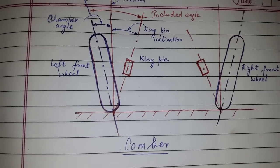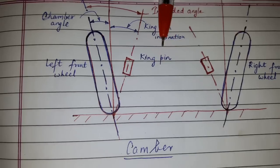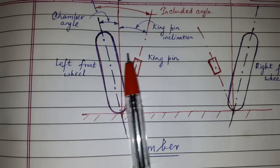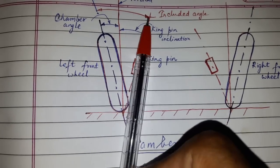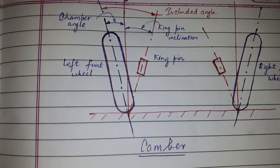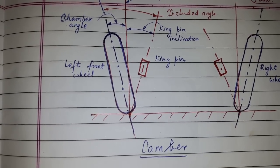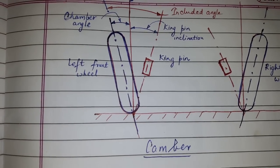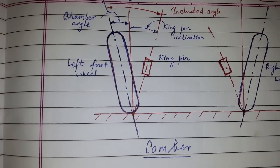...so that when the vehicle is loaded, they automatically come to vertical position. The positive camber is measured in degrees from the vertical plane. The camber angle should not exceed two degrees while running.